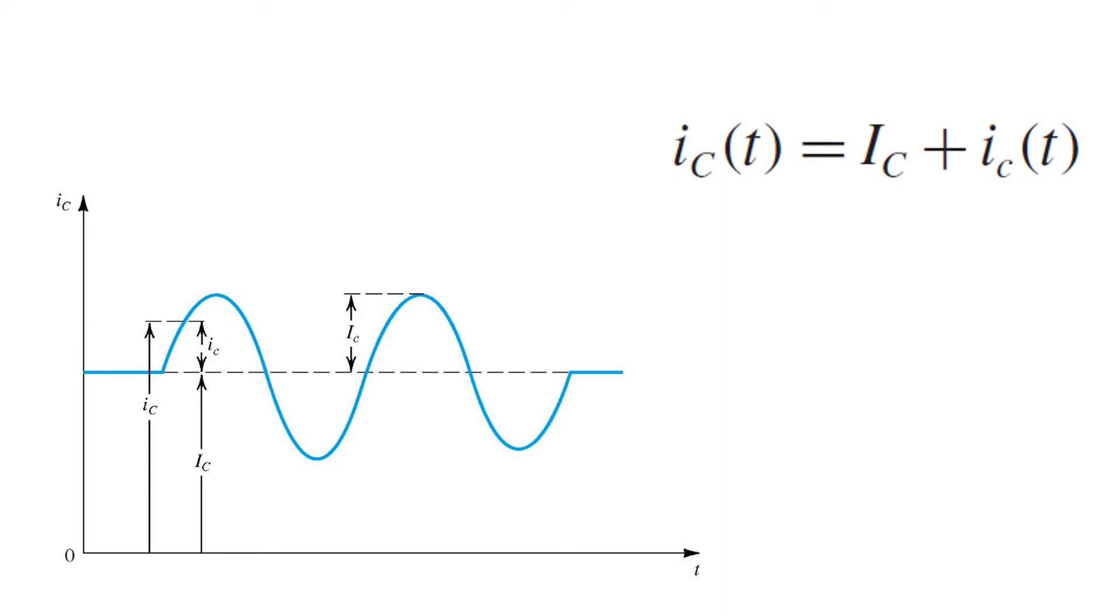In this case, we're looking at a current waveform, IC, but the same will be true of voltage waveforms as well. Note the notation we've used for the symbol IC, lowercase i, and uppercase subscript c.